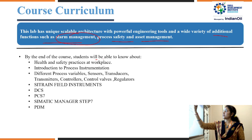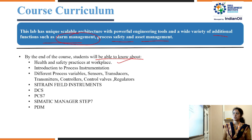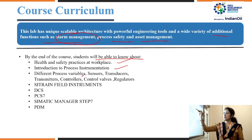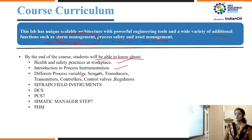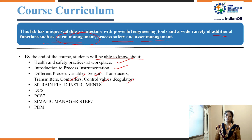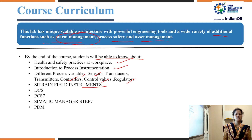By the end of the course, students will know about general functions, health and safety practices at the workplace, introduction to process instrumentation, different process variables — pressure, temperature, flow, and level — and the various sensors, transmitters, and transducers used for those variables, along with controllers, control valves, and regulators. In the lab, we are provided with Sitrans field instruments in a rack consisting of various transmitters giving pressure, temperature, flow, and level measurements, which we can calibrate and analyze.